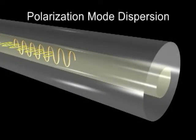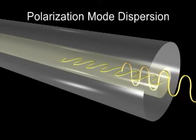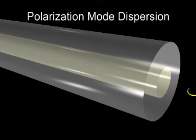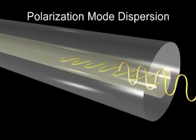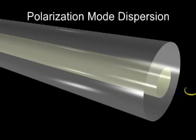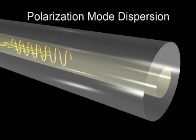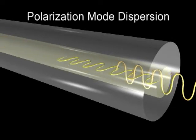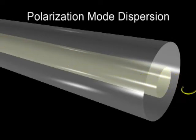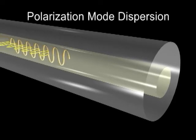And polarization mode dispersion or PMD. PMD results because fibers are not perfect, and slight differences in symmetry along the fiber span cause one of the polarization modes to propagate slower than the other, resulting in pulse spreading. This is critical in high-speed systems operating faster than 2.5 gigabits per second.